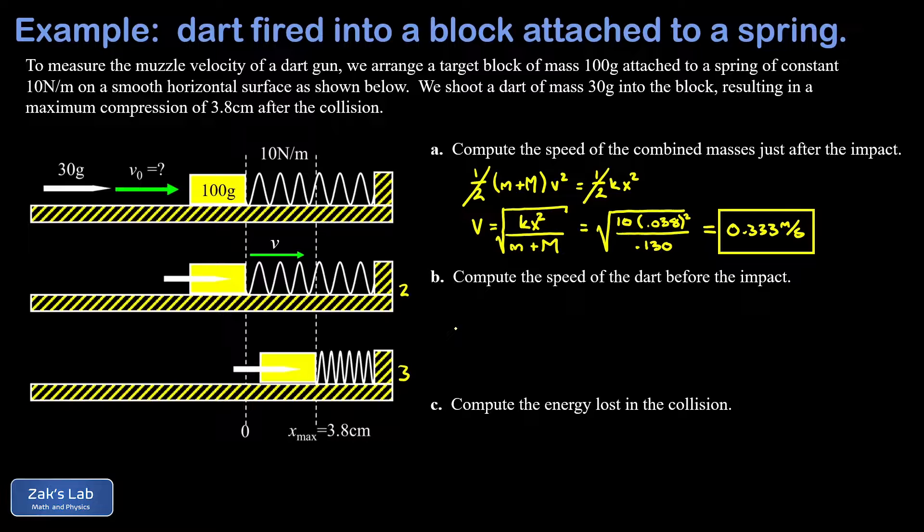Next, we want to compute the speed of the dart before the impact occurred. The key physical point here is to realize that we had an inelastic collision between the dart and the block. Provided that we don't have too much compression of the spring happening during the collision itself, the momentum is going to be conserved during this collision. That's a really good approximation. The collision should happen very rapidly before the spring starts to compress and exert a force on the combined masses.